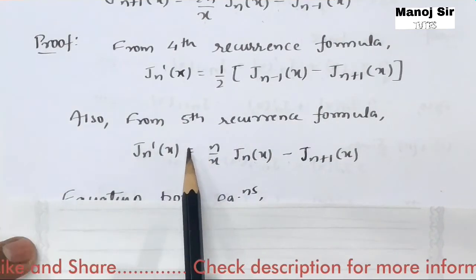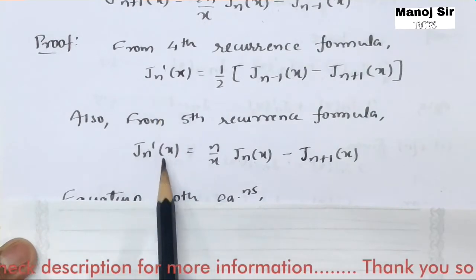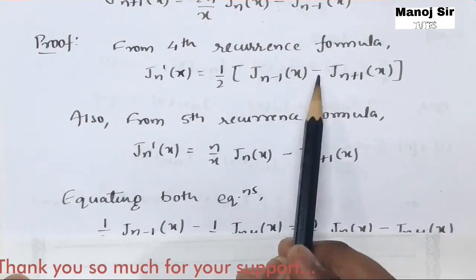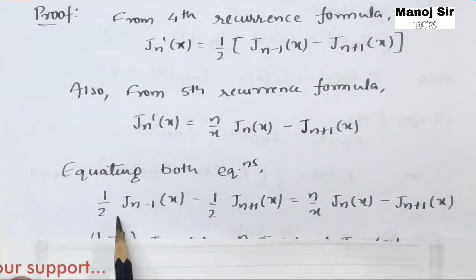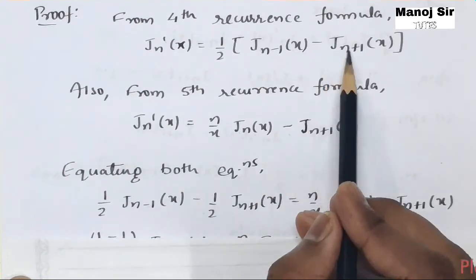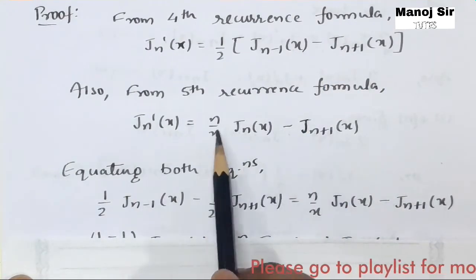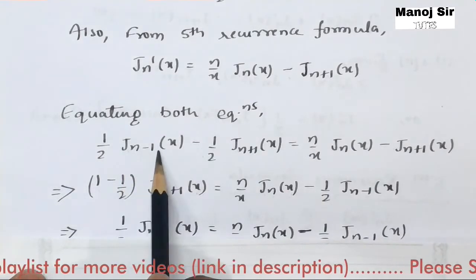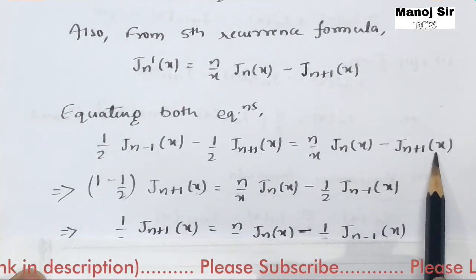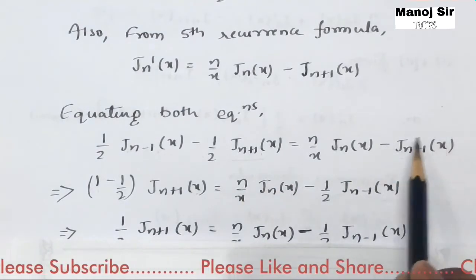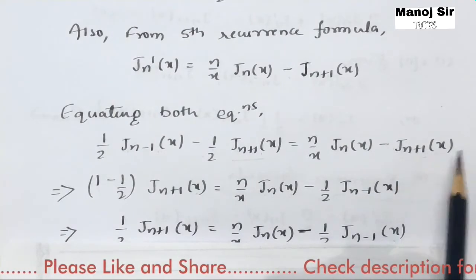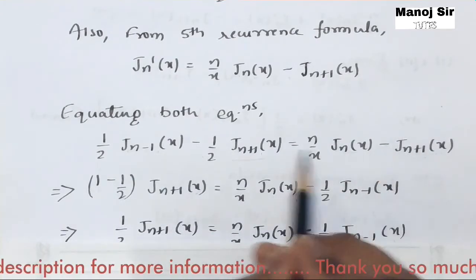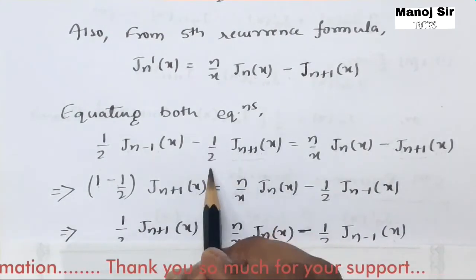In the left-hand side, jn'(x) is common to both equations, so we can equate them. Equating both: half of jn-1(x) minus half of jn+1(x) equals n upon x times jn(x) minus jn+1(x). Now we have jn-1(x), jn+1(x), jn(x), and jn+1(x). We take jn+1(x) to the left-hand side, making its coefficient positive: one minus half gives coefficient one-half for jn+1(x).